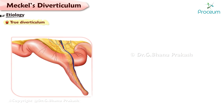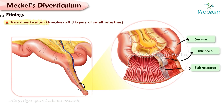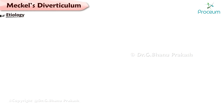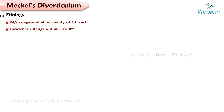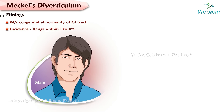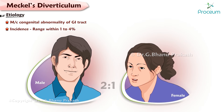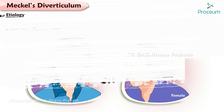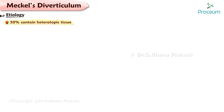Meckel's Diverticulum is a true diverticulum, involving all three layers of the small intestine. It is the most common congenital abnormality of the gastrointestinal tract, with an incidence ranging from 1 to 4% and a male-to-female ratio of 2 to 1. 50% of diverticula contain heterotopic tissue, with gastric mucosa as the most common type. A few diverticula contain pancreatic tissue.